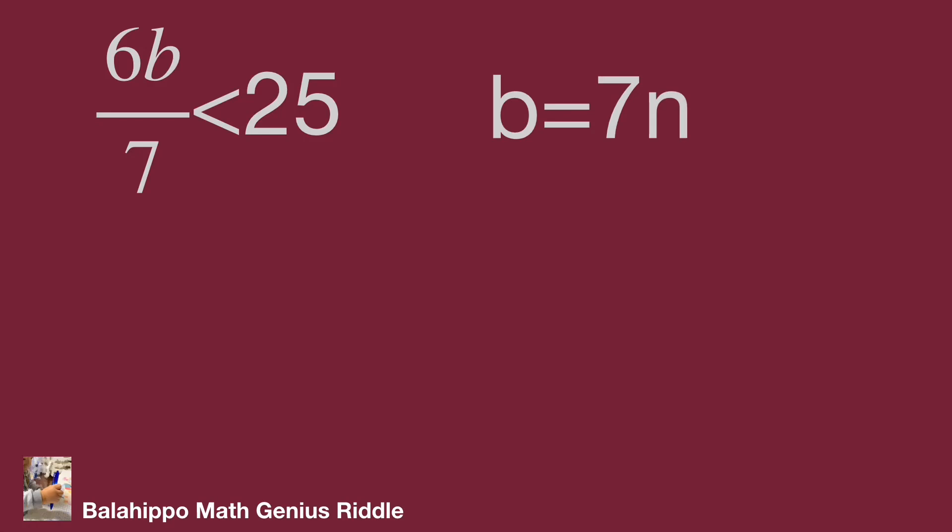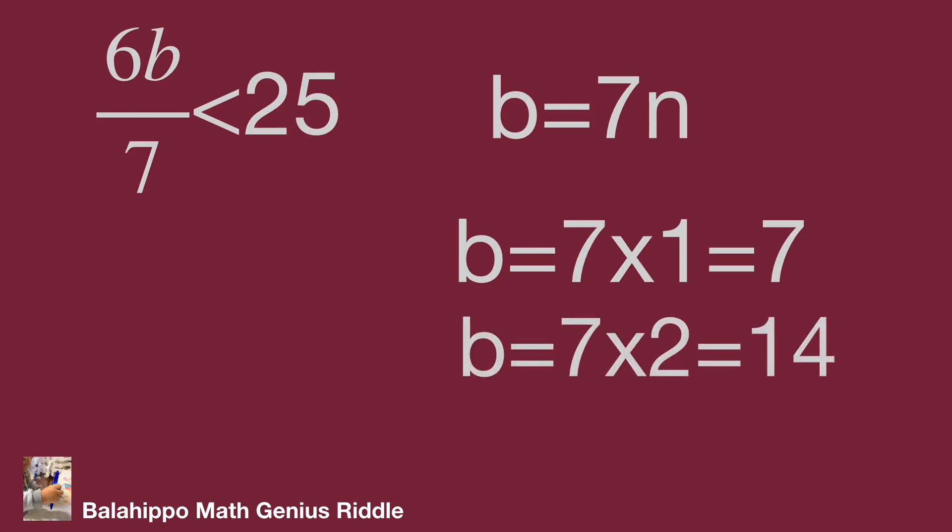Then we adjust b equals 7 times n. Check if n equals 1, b equals 7 times 1 equals 7. If n equals 2, b equals 7 times 2 equals 14. If n equals 3, b equals 7 times 3 equals 21.